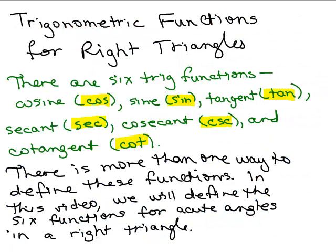We're going to talk about the trigonometric functions for right triangles. There are six trig functions: the cosine, sine, tangent, secant, cosecant, and cotangent. These are our abbreviations — cosine is just COS, sine is just SIN, et cetera.